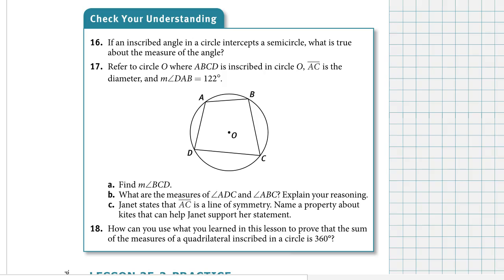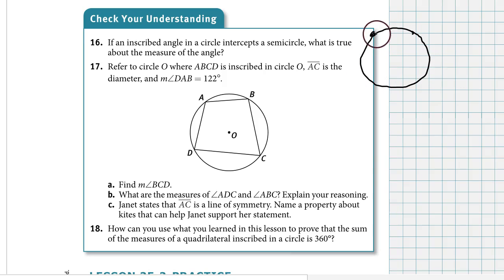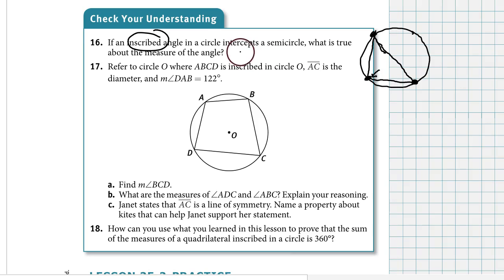Let's jump ahead to the check-your-understanding questions. Number 16: if an inscribed angle in a circle intercepts a semicircle, what's true about the measure of the angle? If a diameter cuts the circle in half creating two semicircles, and an inscribed angle intercepts the semicircle, with one side touching each endpoint of the diameter, that angle is 90 degrees.